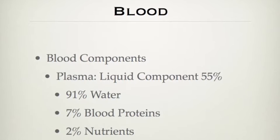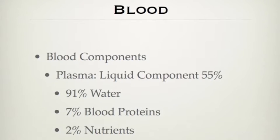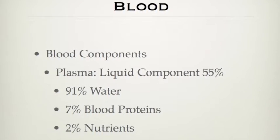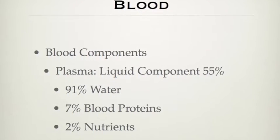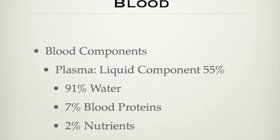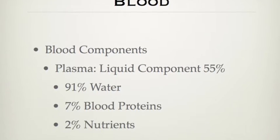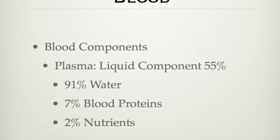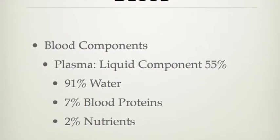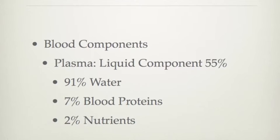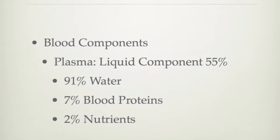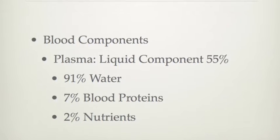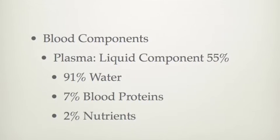Blood is made up of two different components. The first is plasma, which consists of 55% of blood. 91% of the plasma is water, 7% is protein, and 2% is our nutrients.